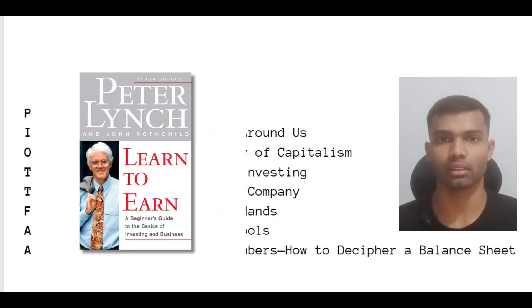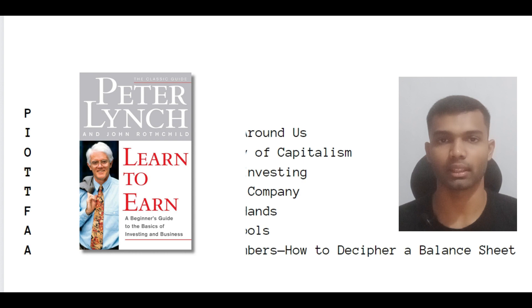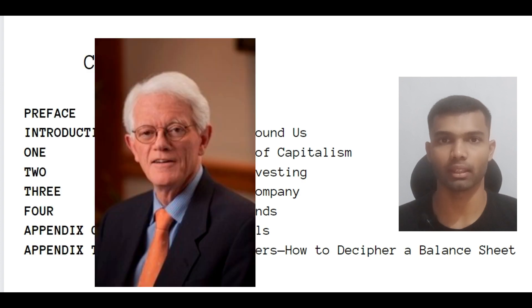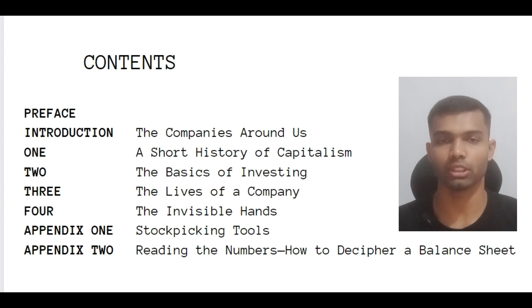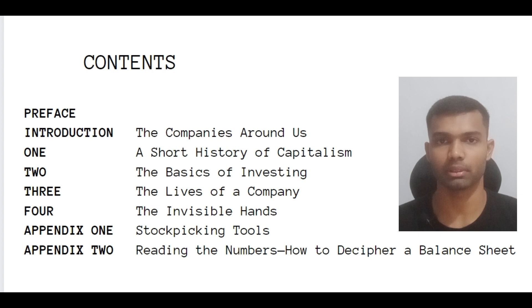Let's get started. The Learn to Earn book was written and published by Peter Lynch and John Rothschild in the year 1995. We have seen who Peter Lynch is in the previous video. John Rothschild is a freelance writer and economist. The book name itself suggests it is a beginner's guide for investing and business.